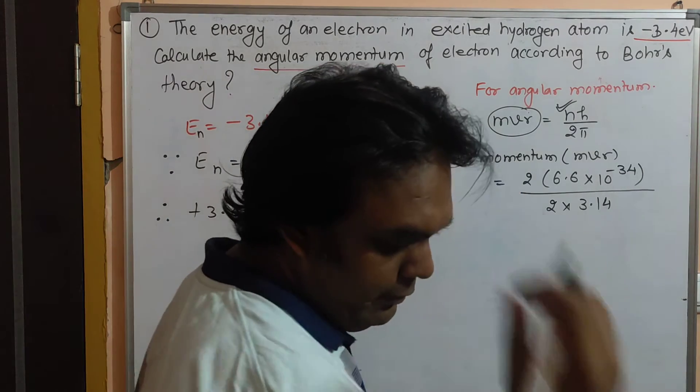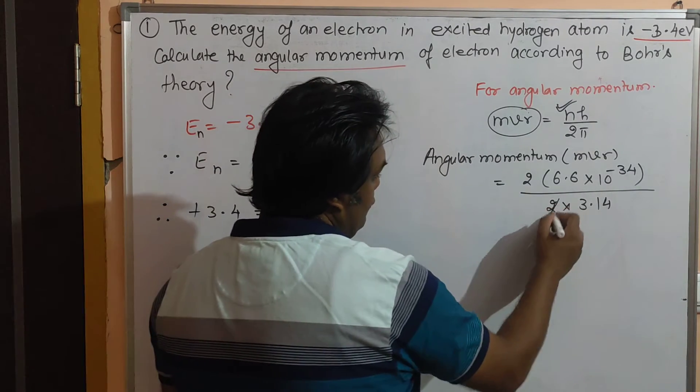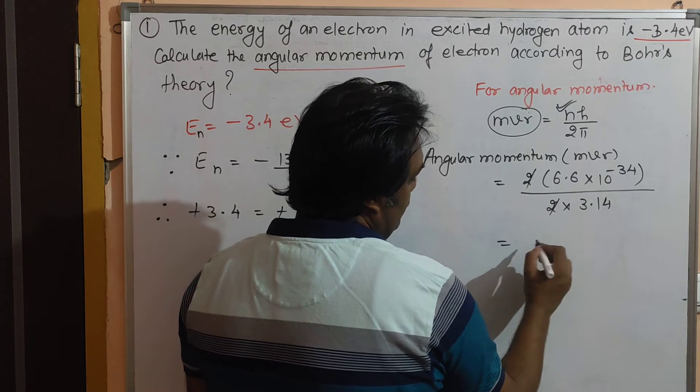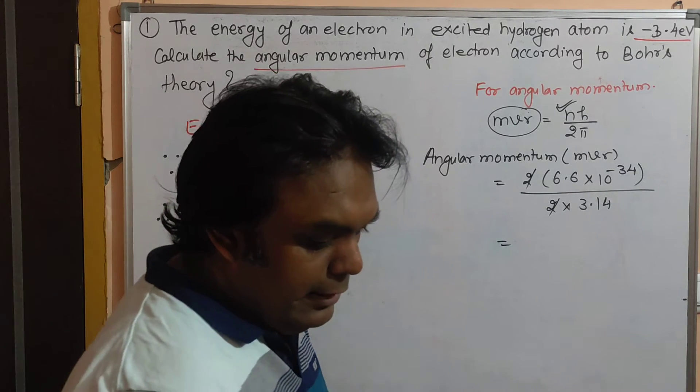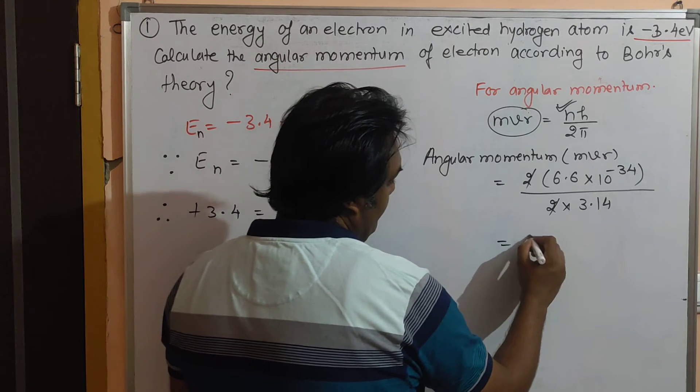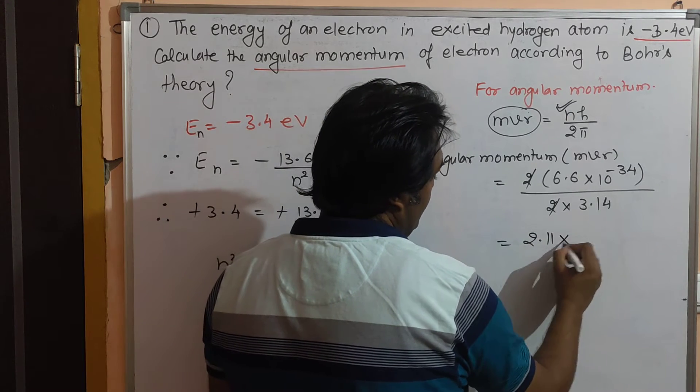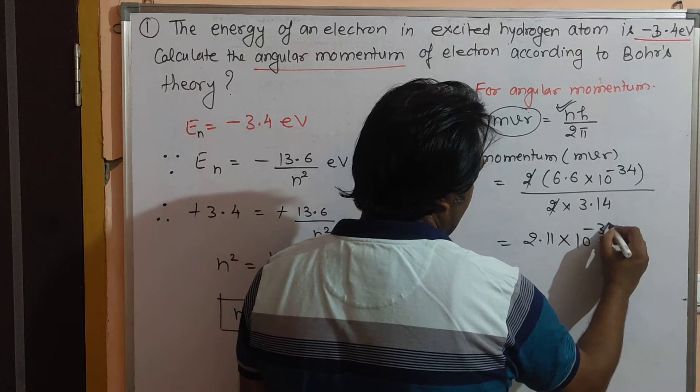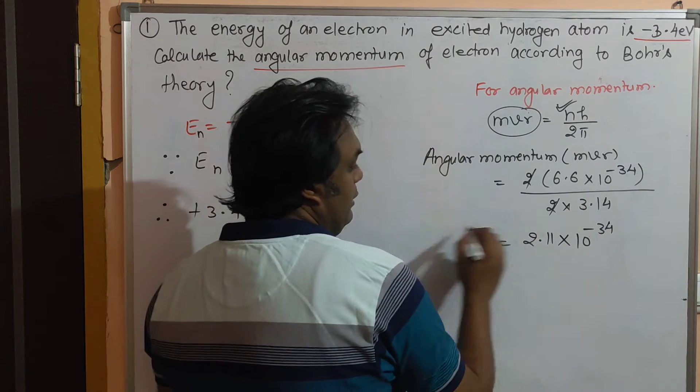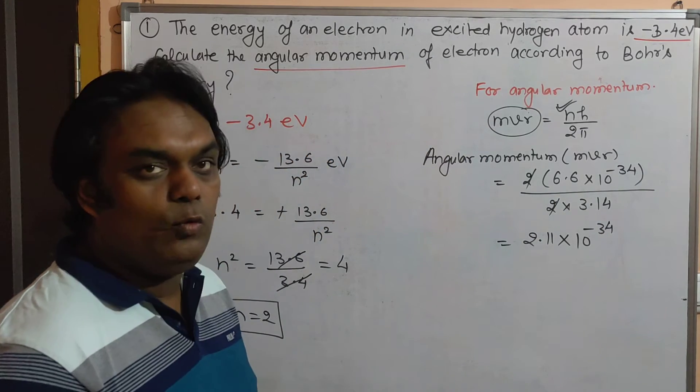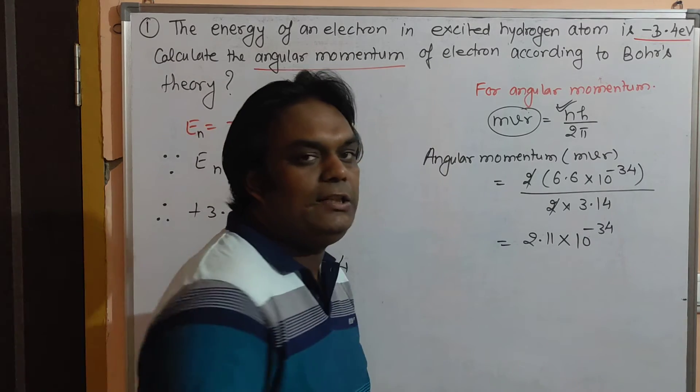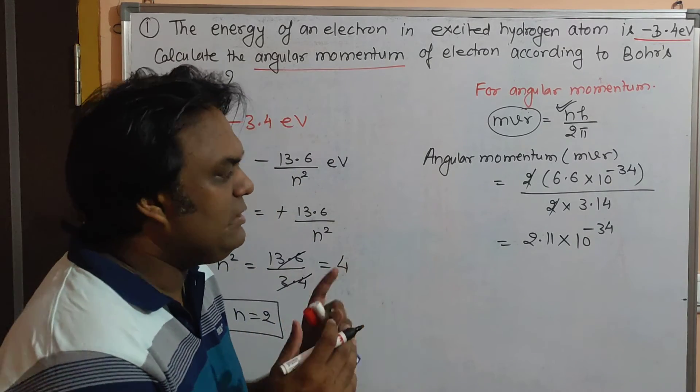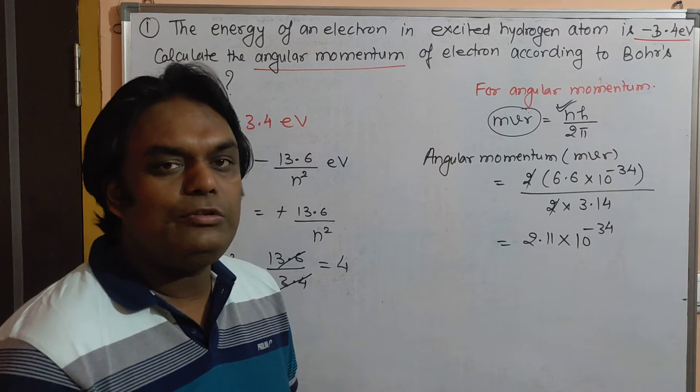Now we can calculate this. The 2 and 2 cancel, so it will be approximately 2.11 × 10⁻³⁴. What will be the unit for angular momentum? If you will not write down the unit or specify it, you will lose one mark in your board examination.